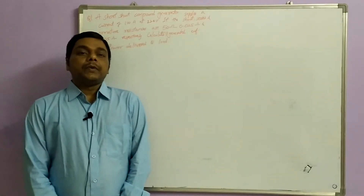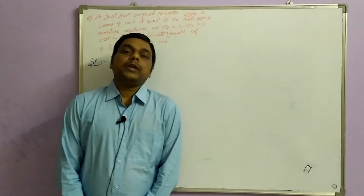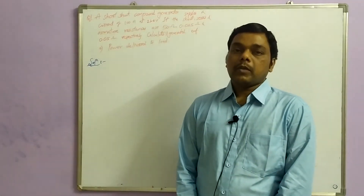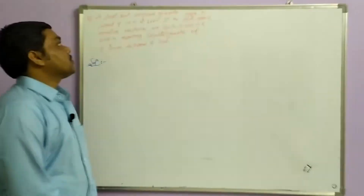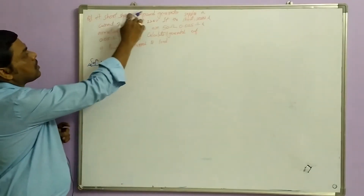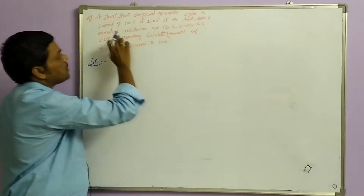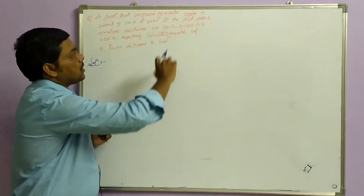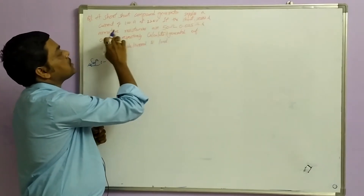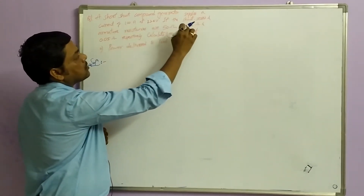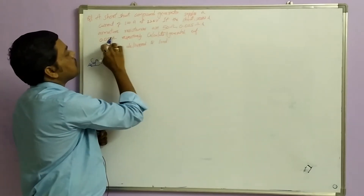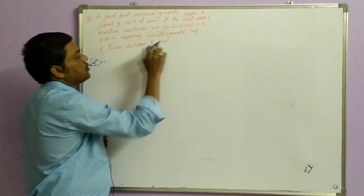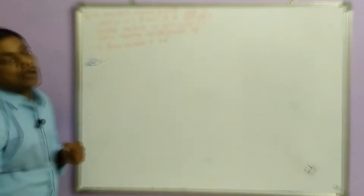Good morning everyone, myself Sanjeev Kumar. Today in this lecture we are going to solve simple numerical problems. The question is: a short shunt compound generator supplies a current of 100 amperes at 220 volts. If the shunt, series, and armature resistances are 50 ohms, 0.025 ohms, and 0.05 ohms respectively, calculate the generated EMF and power delivered to the load.